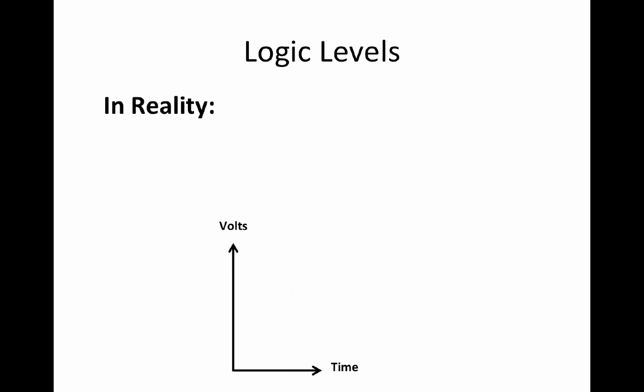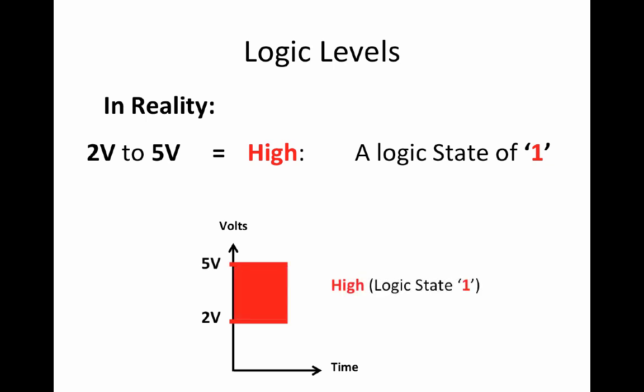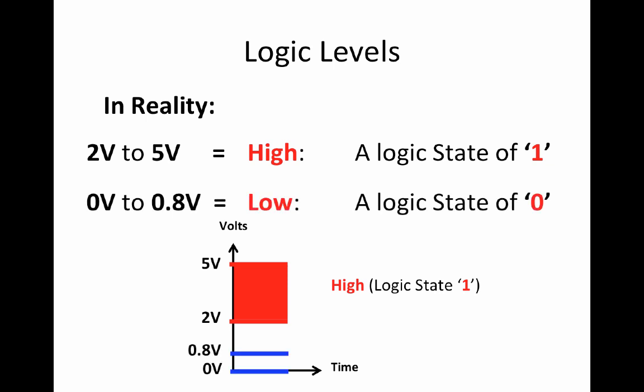In reality, digital circuits are designed to accept high and low signals deviating substantially from these ideal values. For example, in TTL gate circuits, range from 2 to 5 volts for a high logic state and 0 to 0.8 volts for a low logic state.